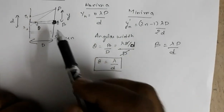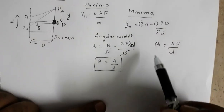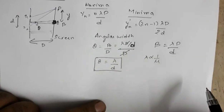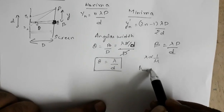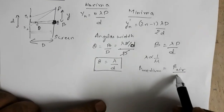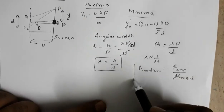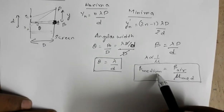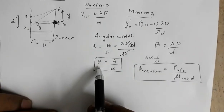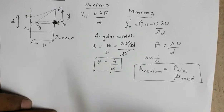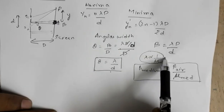A common question is: if the Young's double slit apparatus is immersed in water, what happens to β and θ? Since λ is inversely proportional to refractive index, the fringe width in a medium is β_medium = β_air / μ, where μ is the refractive index of the medium. Similarly, angular width in a medium is θ_medium = θ_air / μ. This follows from Cauchy's law.